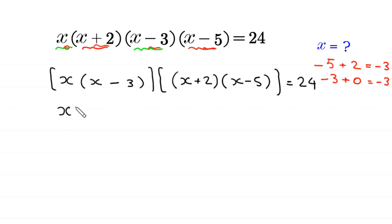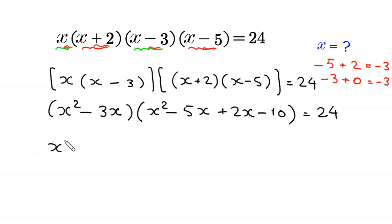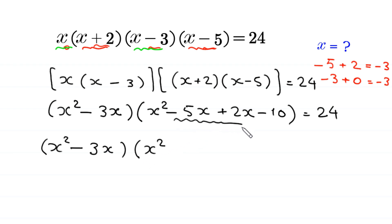Expanding: x times x gives x squared, and x times negative 3 gives negative 3x. For the second group: x times x gives x squared, x times negative 5 gives negative 5x, plus 2x, and 2 times negative 5 gives negative 10. So we get (x squared minus 3x) times (x squared minus 3x minus 10) is equal to 24.